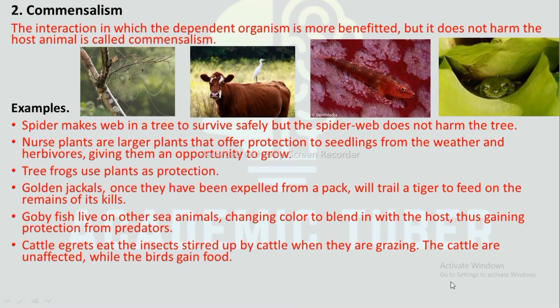More examples of commensalism: Nurse plants are larger plants that offer protection to seedlings from weather and herbivores. Tree frogs use plants as protection. Golden jackals, once expelled from a pack, will trail a tiger to feed on the remains of its kill. Goby fish live on other sea animals, changing color to blend in with the host, gaining protection from predators. Cattle egrets eat insects stirred up by cattle when they are grazing — the cattle are unaffected while the birds gain food.